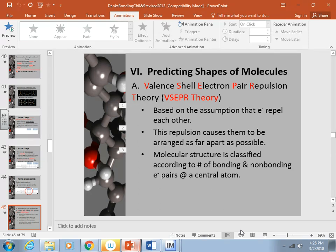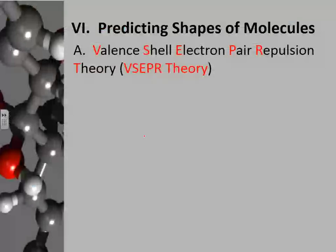Now that we've talked about drawing Lewis structures, resonance, and formal charge, let's look at how we would go about predicting the shapes of our molecules. I'm going to upload a link for y'all to use some PhET simulations, but after we go through this lesson and talk about it in class some more. The way that we predict the shapes of our molecules is we use the VSEPR theory — valence shell electron pair repulsion theory. We say VSEPR for short.